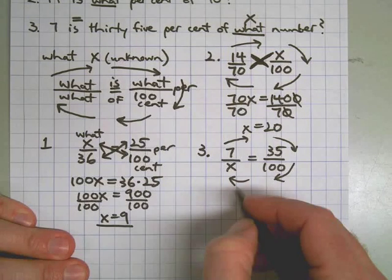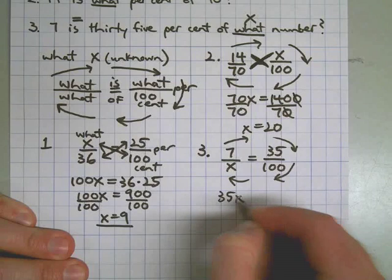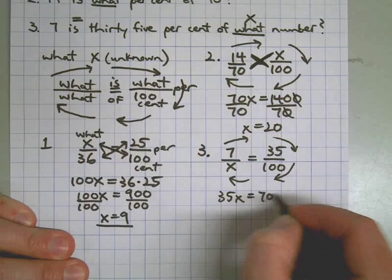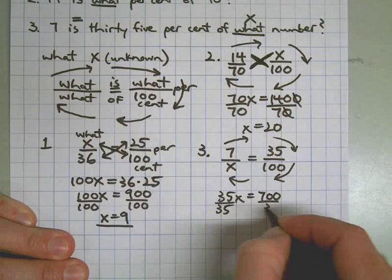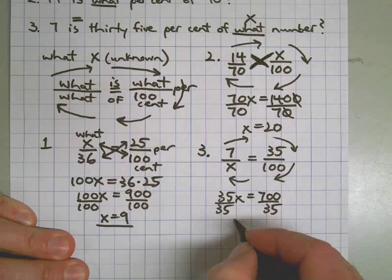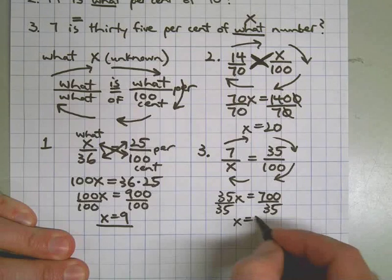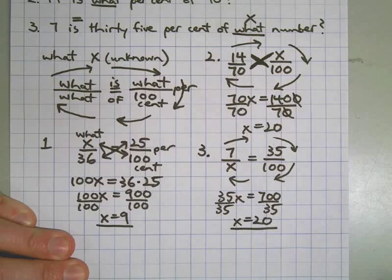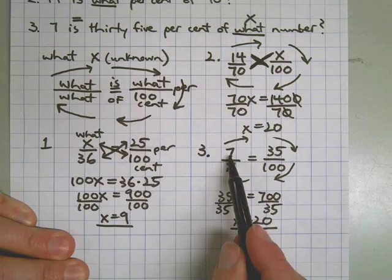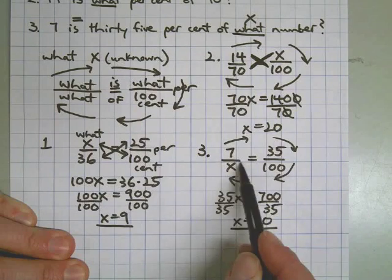Now we're going to cross multiply. 35 times x on one side. 700 on the other side. Divide both sides by 35. And x equals 20. So to answer the question, seven is 35 percent of 20.